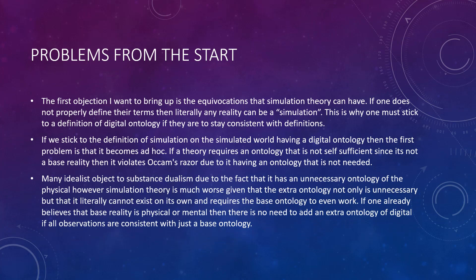Many idealists object to substance dualism due to the fact that it has an unnecessary ontology of the physical. However, simulation theory is much worse, given that the extra ontology not only is unnecessary, but it literally cannot exist on its own — it requires a base ontology to even work. If one already believes that base reality is physical or mental, then there is no need to add an extra ontology of digital if all observations are consistent with just that base ontology.